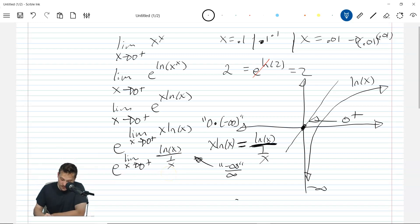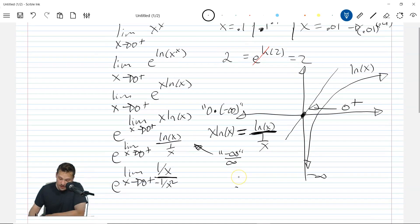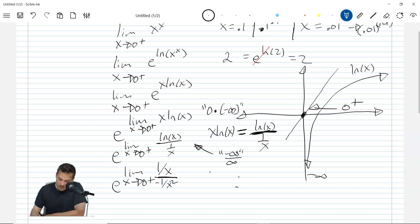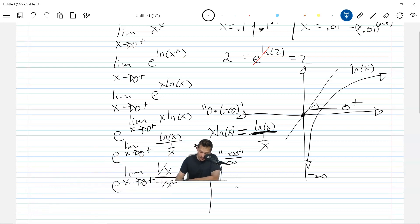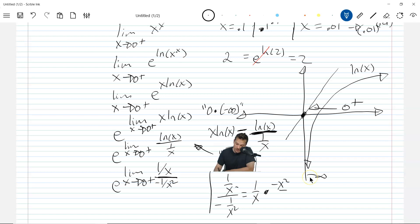So this is going to give us now e to the limit as x approaches 0 from the right. Differentiate ln x, that's 1 over x, division symbol. Differentiate the bottom, which is negative 1 over x squared. And then over here, let's simplify this fraction a little bit. So I'm going to have 1 over x divided by negative 1 over x squared. So we'll have 1 over x, keep change flip, so negative x squared over 1. Simplify that and that's going to give you negative x.